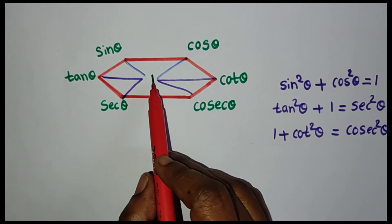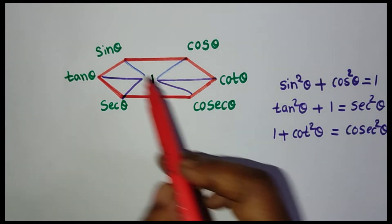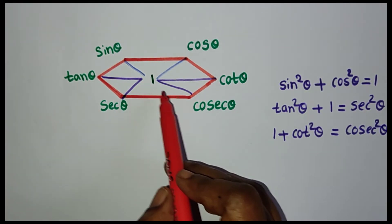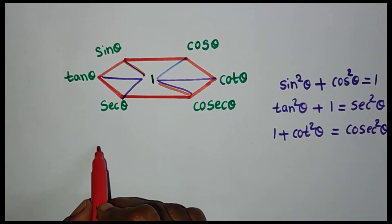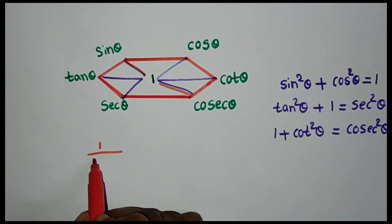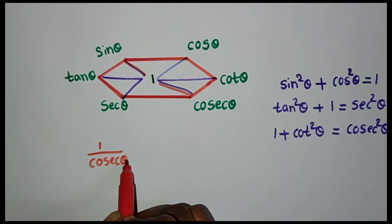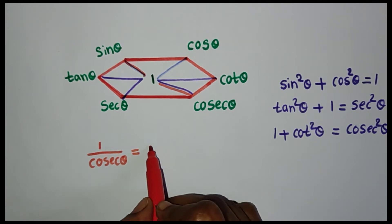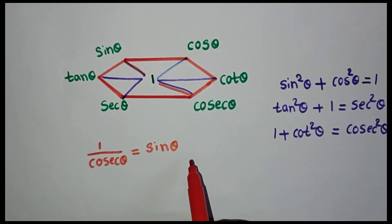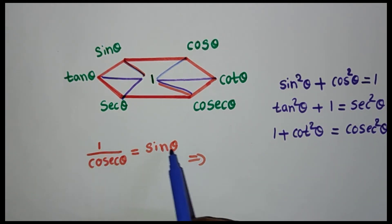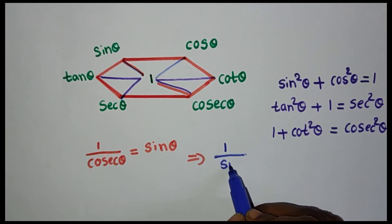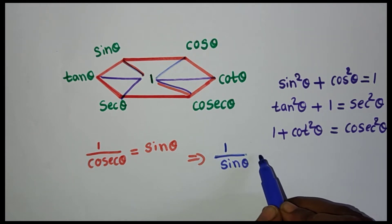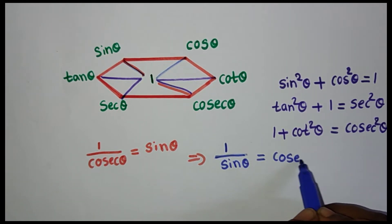You can write more formulas using these hexagon values. One divided by cosecant theta equals sin theta. In the same way, one divided by sin theta equals cosecant theta.